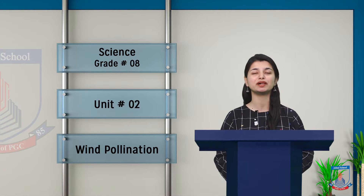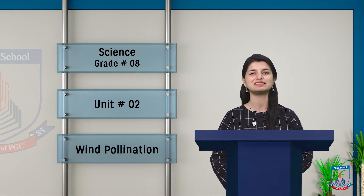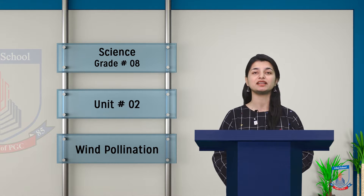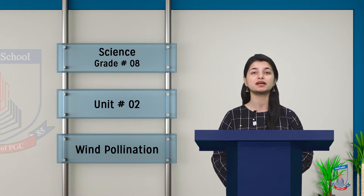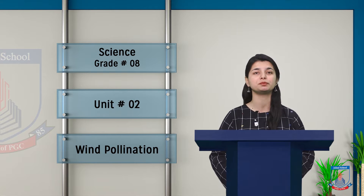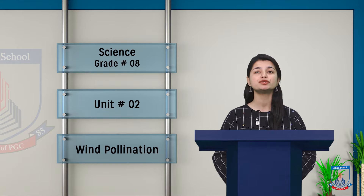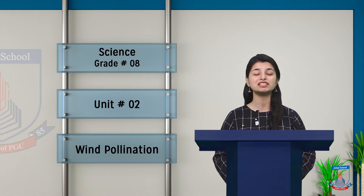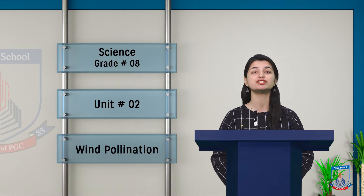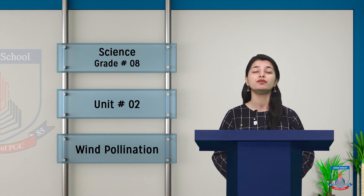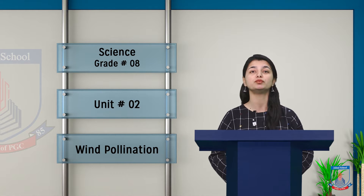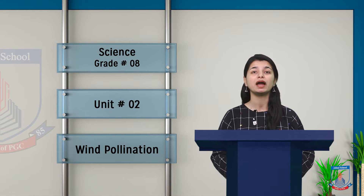Hello and assalamu alaikum, welcome to another science lesson, grade 8. I am Sabah, your science teacher, and we are discussing chapter number 2 about reproduction in plants. We have covered that flowers are a reproductive system and we have also talked about pollination. Today we are starting a new topic which is about wind pollination.